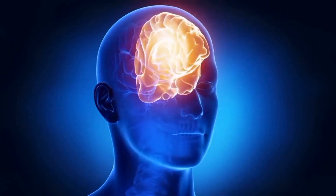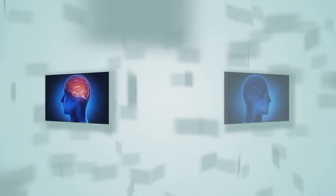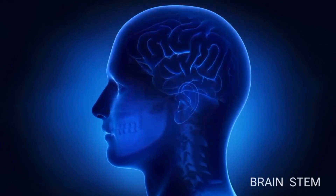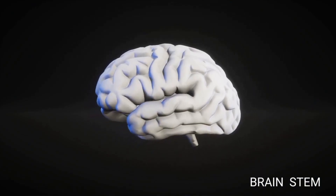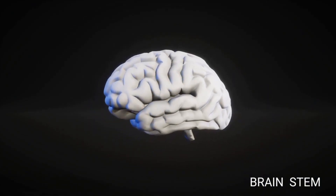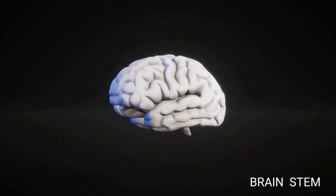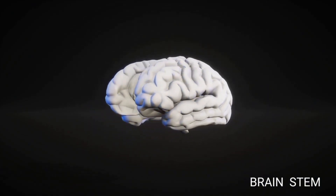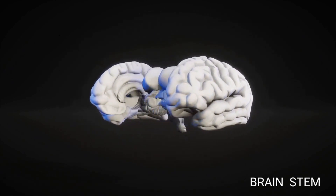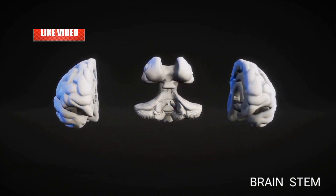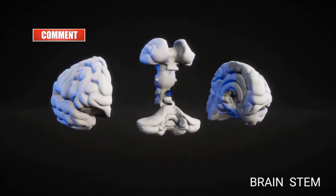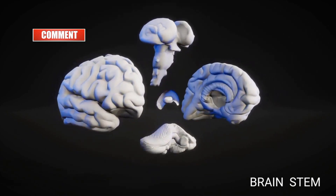The Brain Stem is located at the base of the brain and is continuous with the spinal cord. It houses all nerve connections between different parts of the central nervous system.